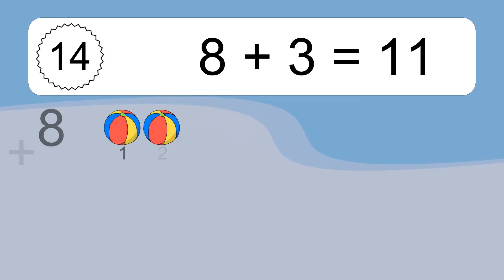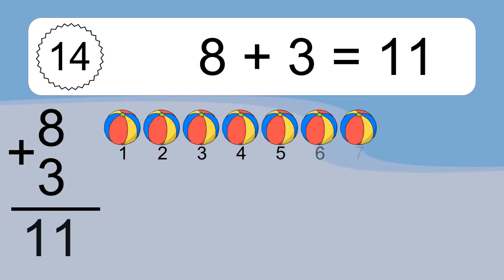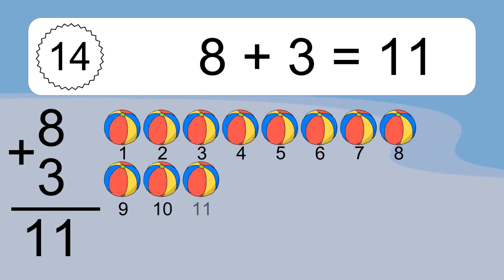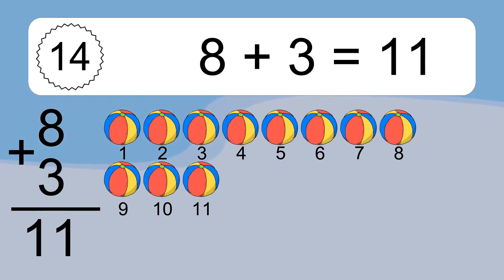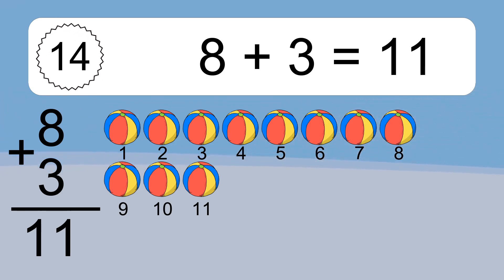8 plus 3 equals what? 8 plus 3 equals 11. Let's count it: 1, 2, 3, 4, 5, 6, 7, 8, 9, 10, 11.